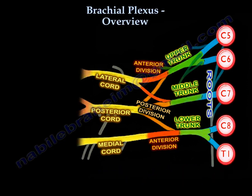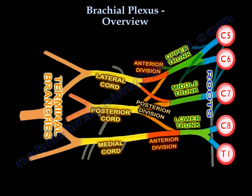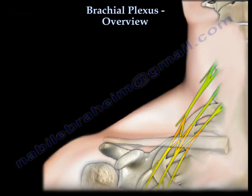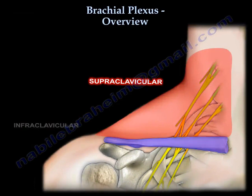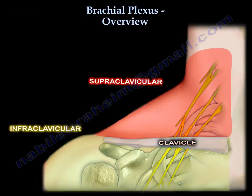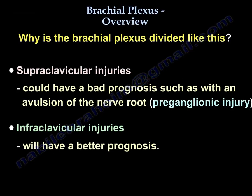Now you end with the branches. The brachial plexus is divided into supraclavicular and infraclavicular parts, using the clavicle as a marker. Anything above the clavicle is supraclavicular; anything below is infraclavicular. Supraclavicular injuries have a bad prognosis and can be avulsion from the root, while infraclavicular injuries have a better prognosis.